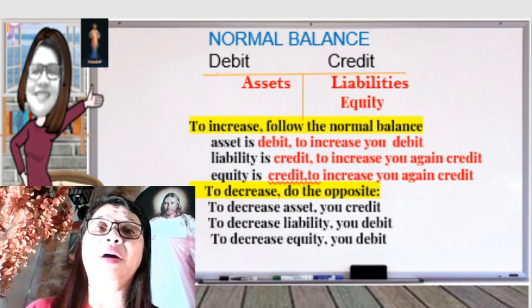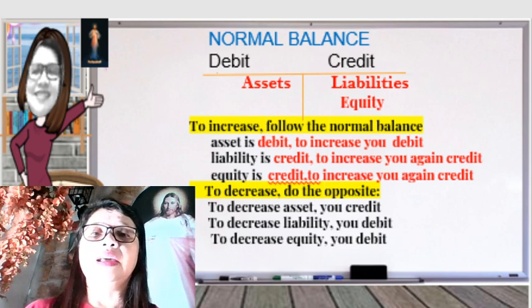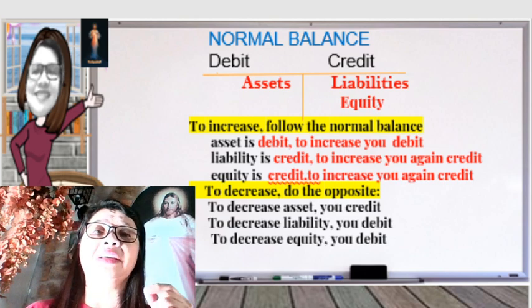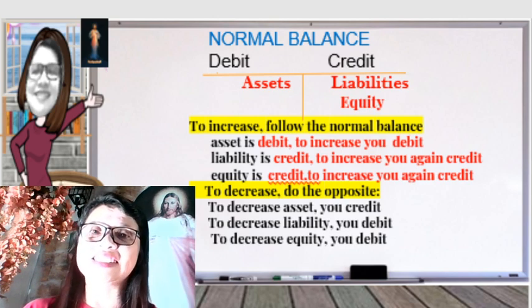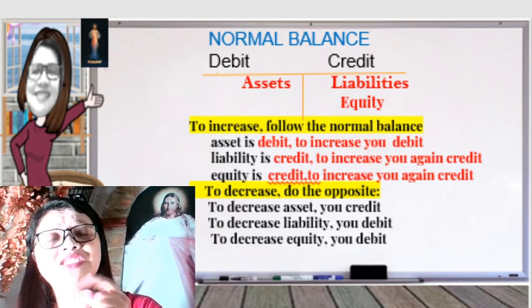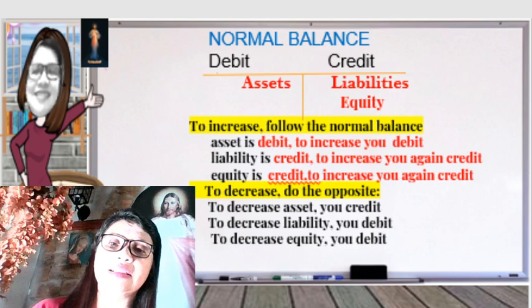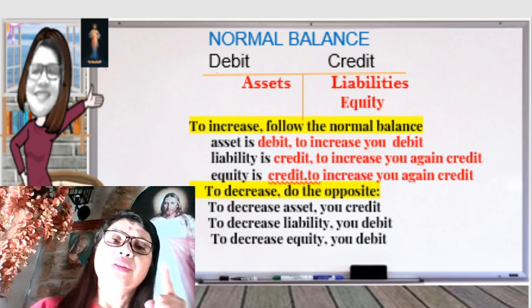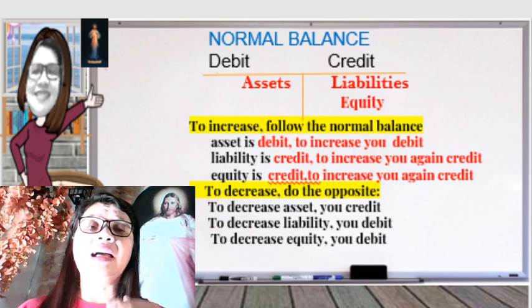Liability has a credit balance, so to increase your liability, you also credit it. Equity has a credit normal balance, so to increase your equity, you again credit it. But if you want to decrease an account, you do the opposite. To decrease your asset, you do the opposite of debit, so you credit. To decrease your liability, you debit. To decrease your equity, you debit. When decreasing an account, you do the opposite of the normal balance.